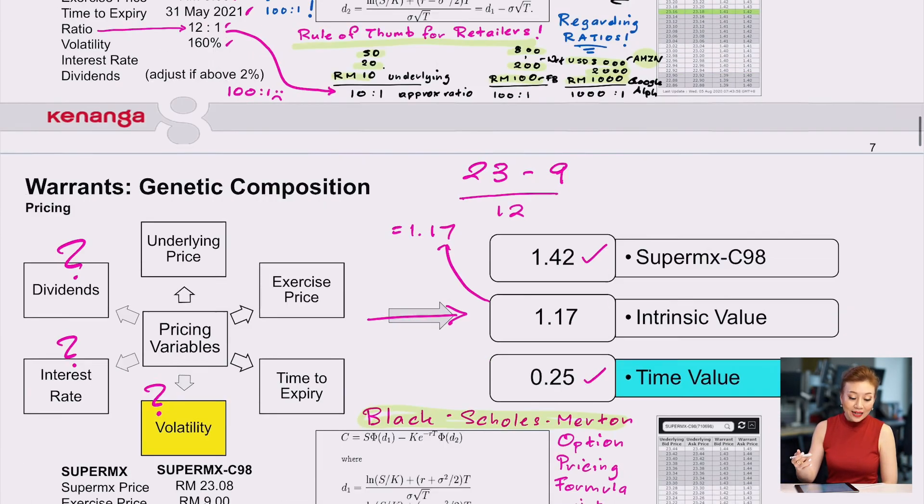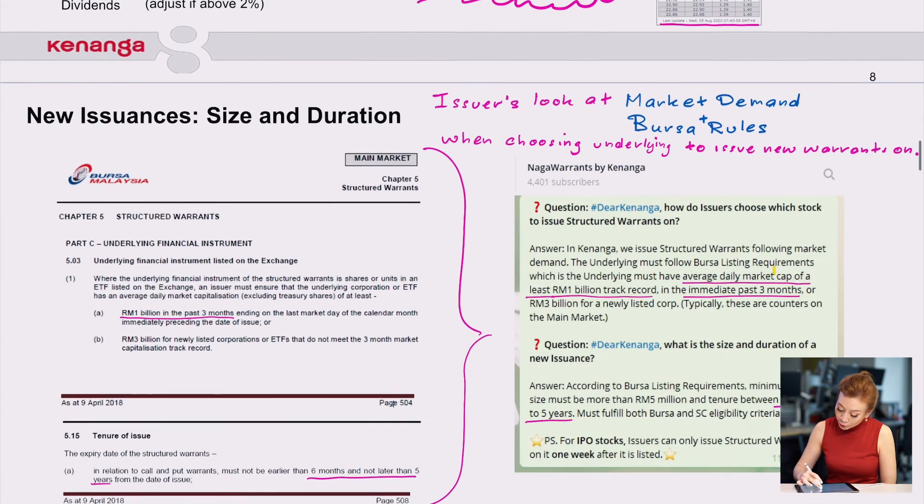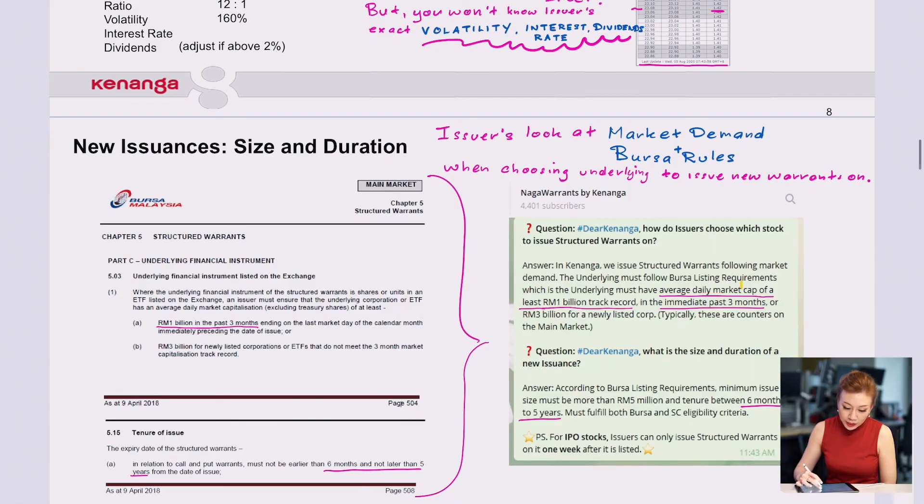New issuances and size and duration of them. A lot of individuals have asked us, why don't you issue Notion, which is $1.80, or M-tag, which is $1, for example. But Sapura, Armada, they're $0.20, $0.10. How come you can issue structured warrants on Sapura, Armada, but you can't issue on those?